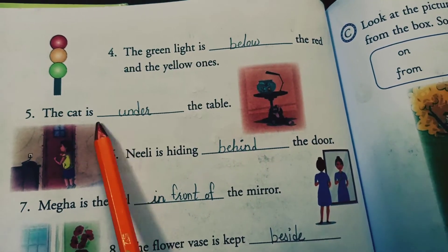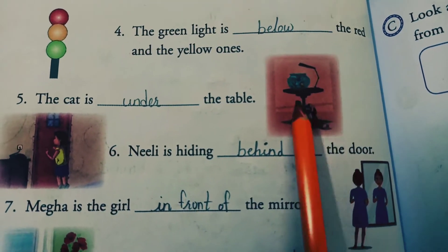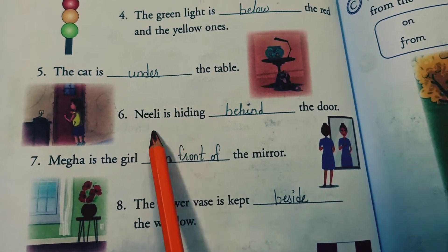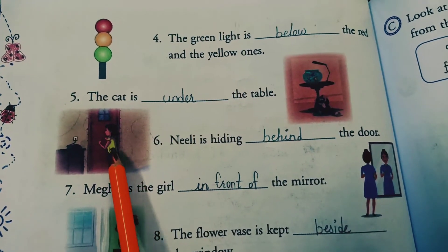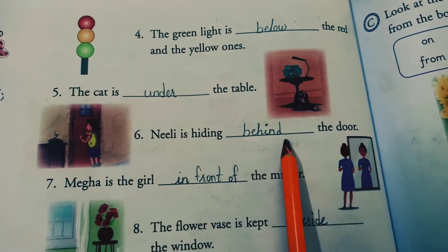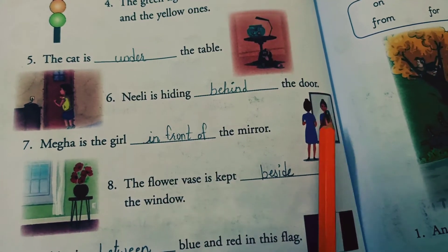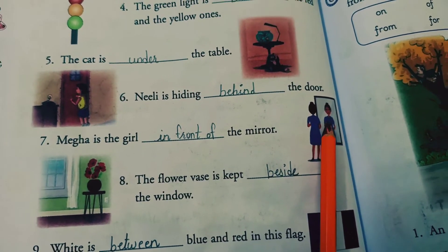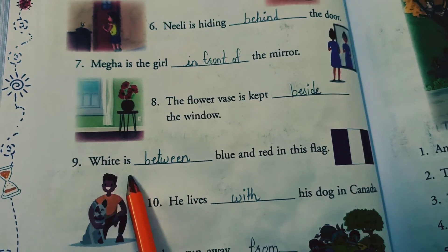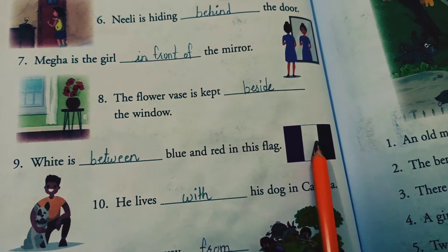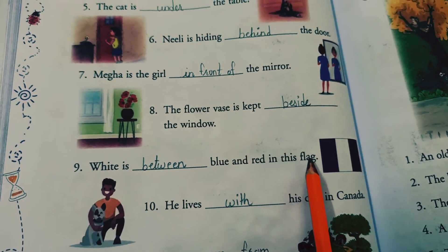The cat is under the table. Neely is hiding behind the door — this preposition is 'behind'. Mega is the girl in front of the mirror — here we use 'in front of'.